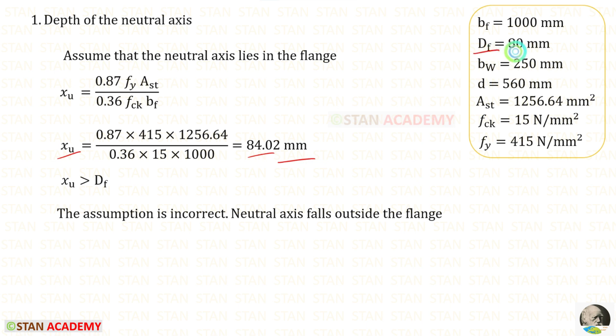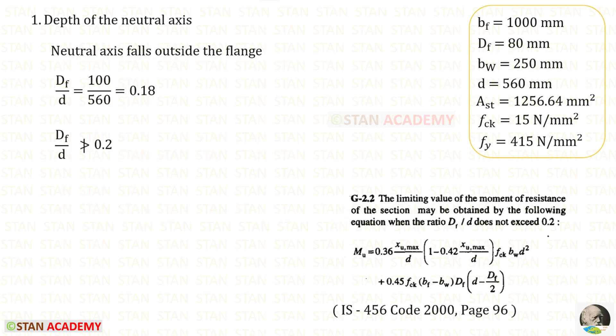The depth of the flange is 80 mm. So xu is greater than Df. In this case our assumption is incorrect. The neutral axis falls outside the flange. Then we need to check whether Df upon D does not exceed 0.2. Df upon D does not exceed 0.2.